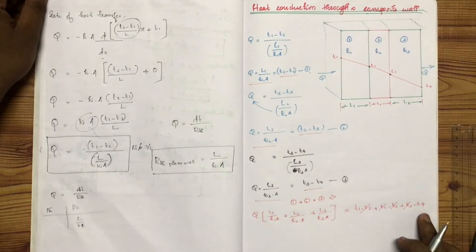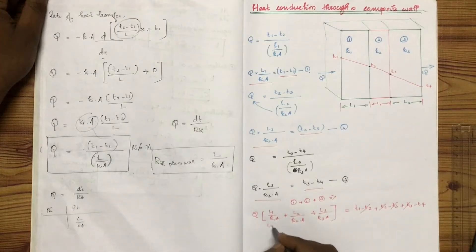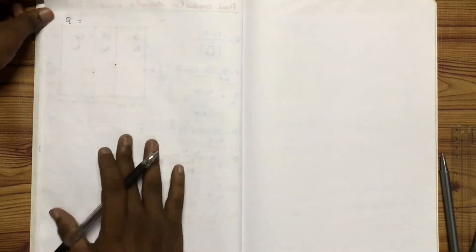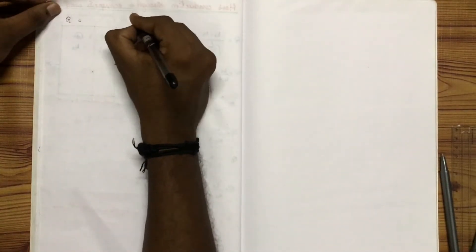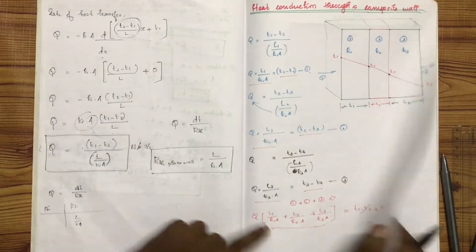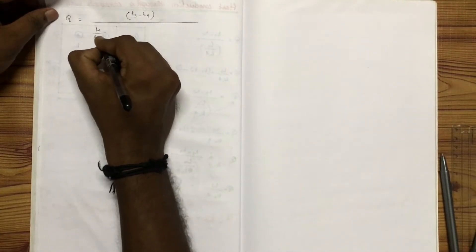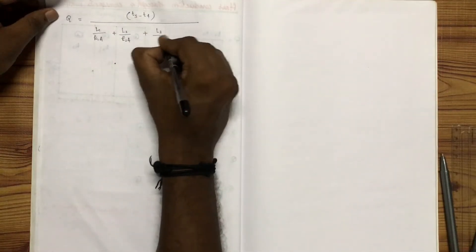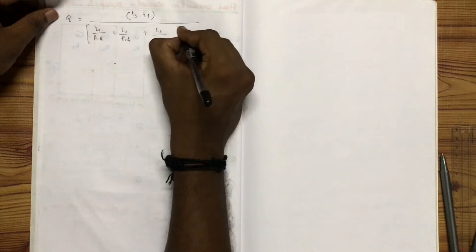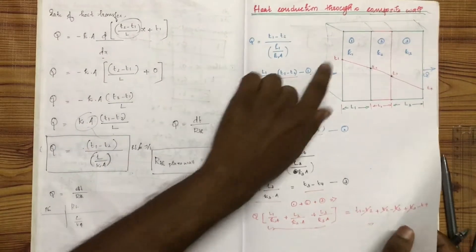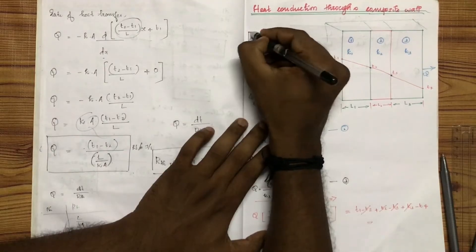T1 minus T4. Q is equal to T1 minus T4 divided by L1 by K1 into A plus L2 by K2 into A plus L3 by K3 into A. This is the final expression.